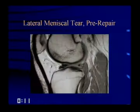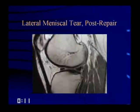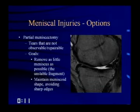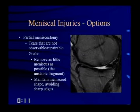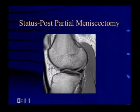Here's a nice example: a bucket handle tear of the lateral meniscus repaired with sutures, looking practically as good as new. Partial meniscectomies are performed for tears that are not observable or repairable — particularly those in the central two-thirds near the free edge. The goal is to remove as little meniscal tissue as possible: just the unstable fragment, maintaining the meniscoid shape and avoiding sharp edges. Here's a patient status post partial meniscectomy where the menisci look fairly normal.